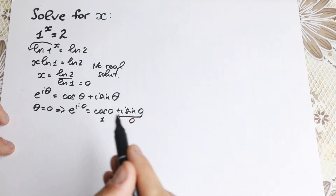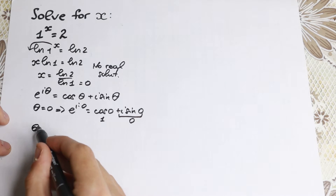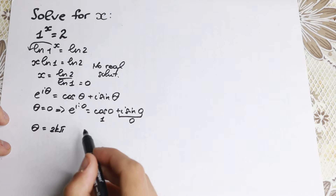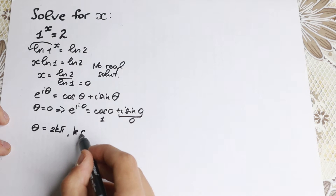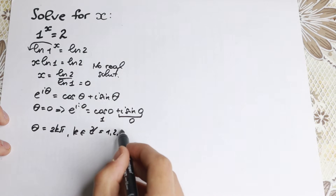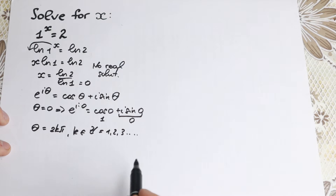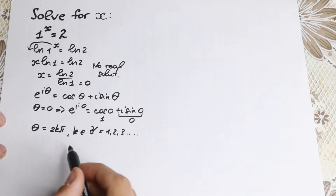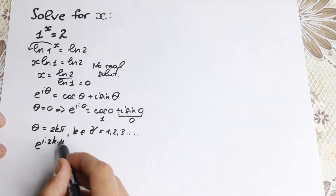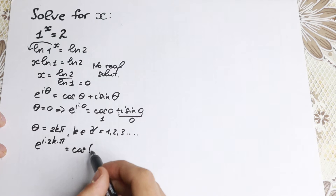Now here is the really important trick. Let theta equal 2k pi, where k is a whole number — k = 1, 2, 3, 4, 5, and so on. Then e to the power i times 2k pi equals cosine 2k pi plus i sine 2k pi.